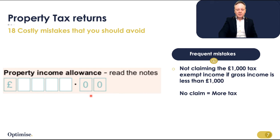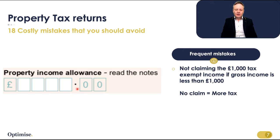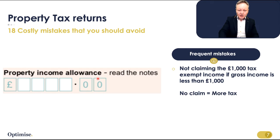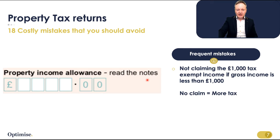Property income allowance — did you know that if you don't earn more than £1,000, you don't have to pay tax on that property income? As long as the gross income is less than £1,000 in a given year, you do not need to pay any tax at all. And yet people circumnavigate it because they're rushing — probably on the 30th or 31st of January — so they don't have time to read the notes, which clearly say read the notes. They end up paying tax on their property income even though they don't need to. What a crazy way to handle your tax affairs.